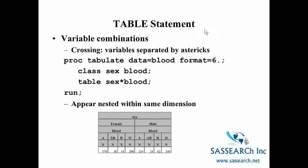Another way you can write the TABLE statement is with a crossing, where variables are separated by an asterisk. Here we're looking at gender and blood, and instead of a space or comma between them, we now have an asterisk. In the resulting table, blood is nested within gender in the same dimension — we have females and their blood type within females, then males and their blood type within males. This is just another way to define your table in PROC TABULATE.